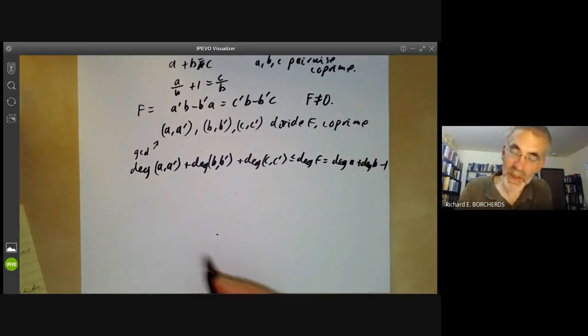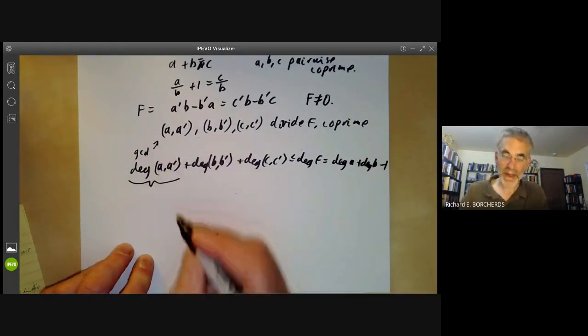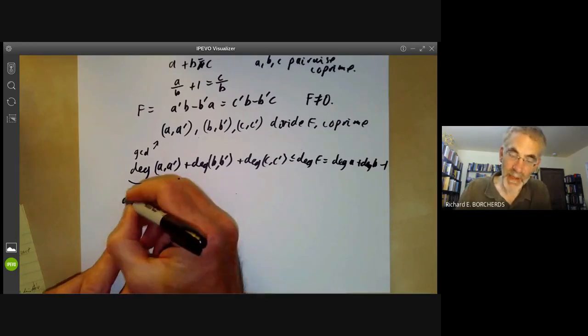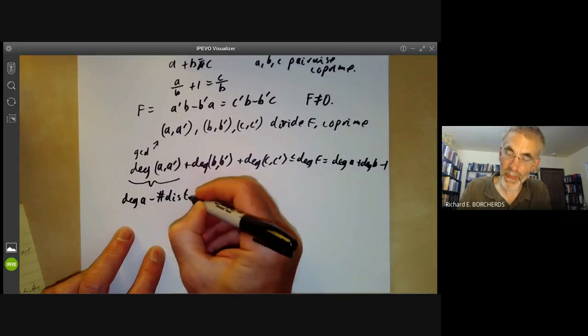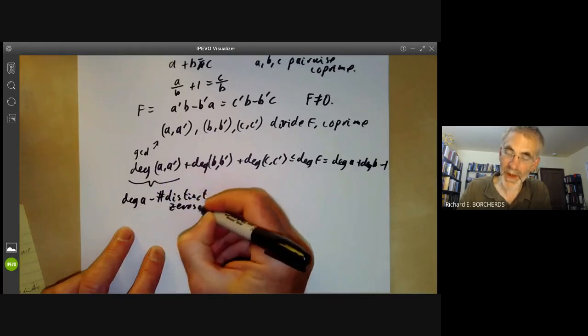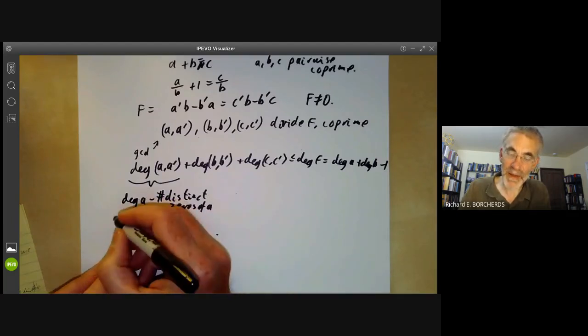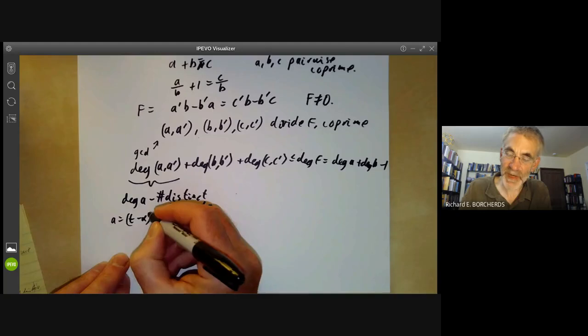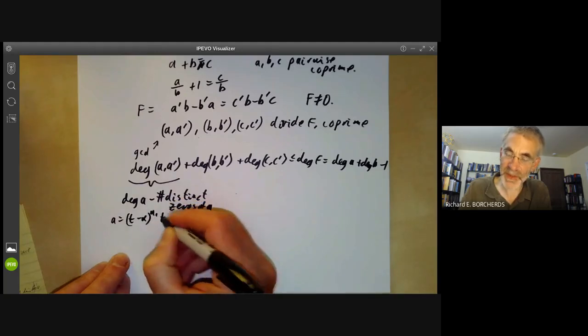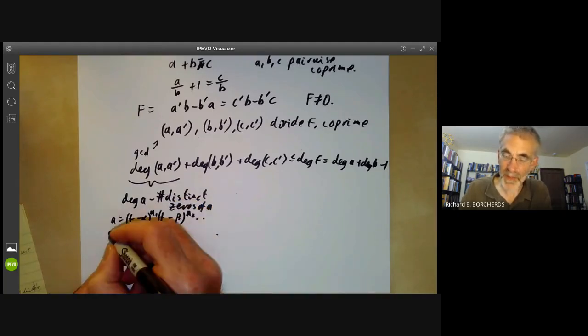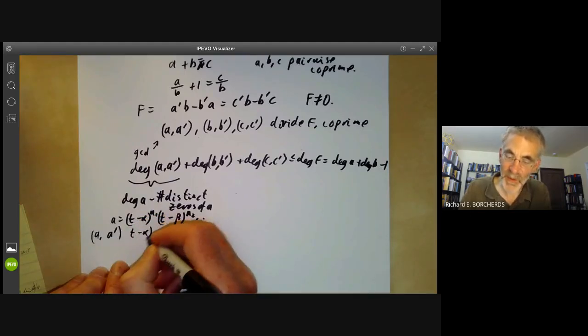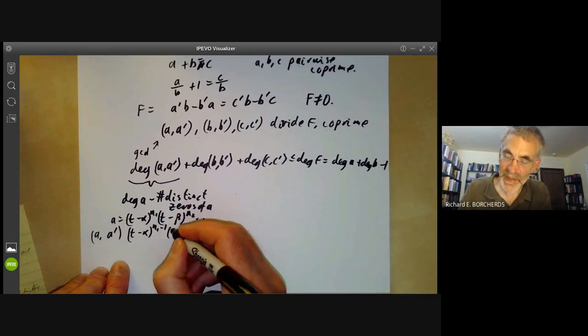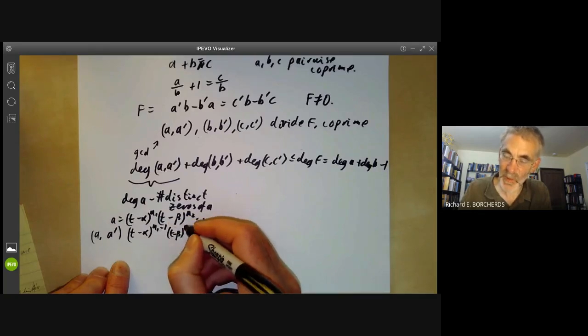And now we notice the degree of (A, A prime) is just the degree of A minus the number of distinct zeros of A. And this follows because if we write A is equal to (T minus alpha) to the N1, (T minus beta) to the N2, and so on, then A prime, then the highest common factor of A and A prime is going to be (T minus alpha) to the N1 minus one, (T minus beta) to the N2 minus one, and so on.